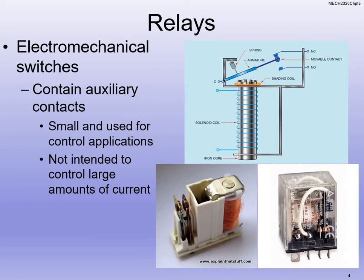It's the exact opposite if we have a normally open relay — the magnetic field closes it. We use auxiliary contacts in small control applications because they cannot handle large amounts of current. These are our electromechanical switches. Before PLCs, you'd have a whole control cabinet wired up with a bunch of electromechanical relays, and that would be the logic as these relays open and close. But these small ones are used for just smaller control applications — no high voltage, because it will blow them.